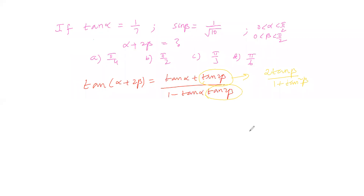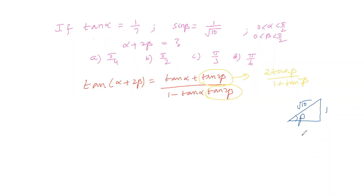To find tan β, we form a triangle with angle β. Since sin β = 1/√10, the opposite side is 1 and hypotenuse is √10. The adjacent side equals √(hypotenuse² minus opposite²) = √(10 minus 1) = 3. Therefore tan β equals opposite over adjacent, which is 1/3.